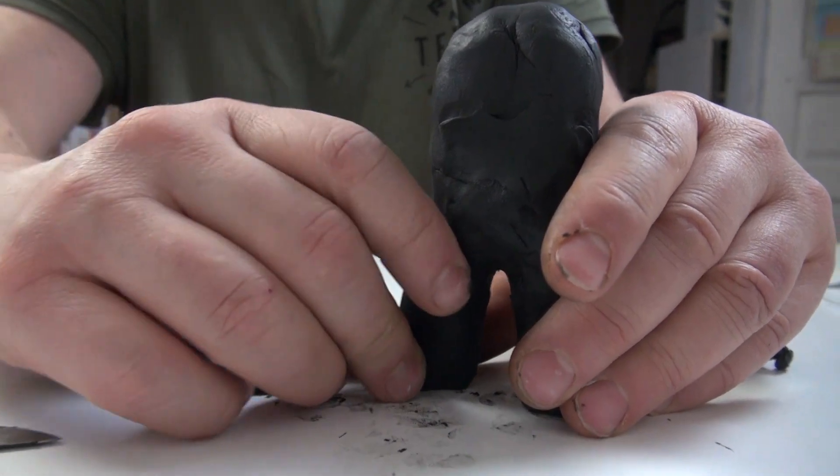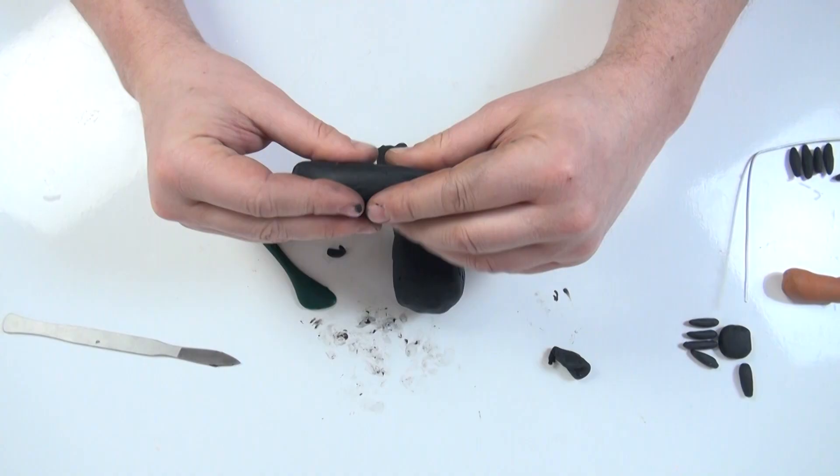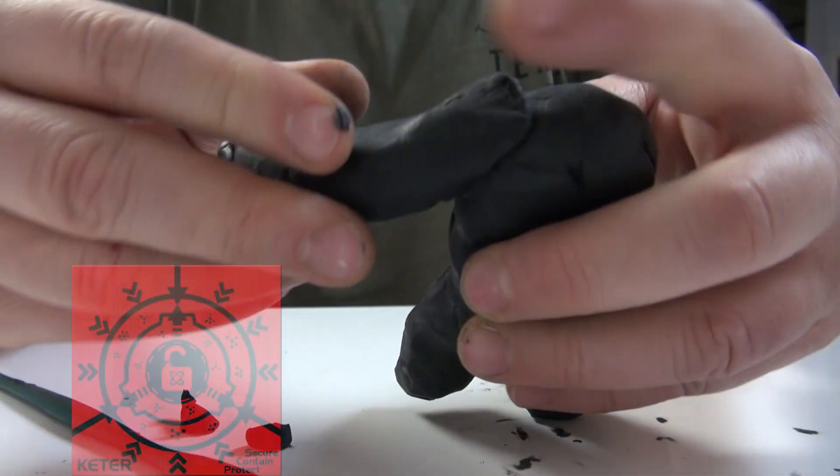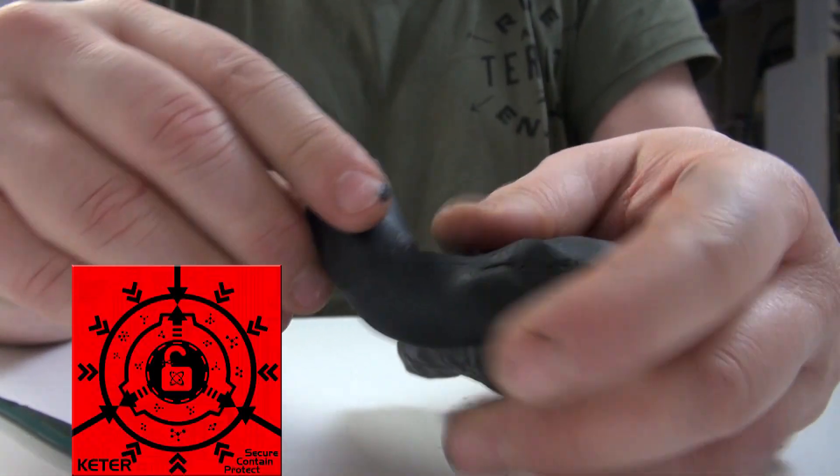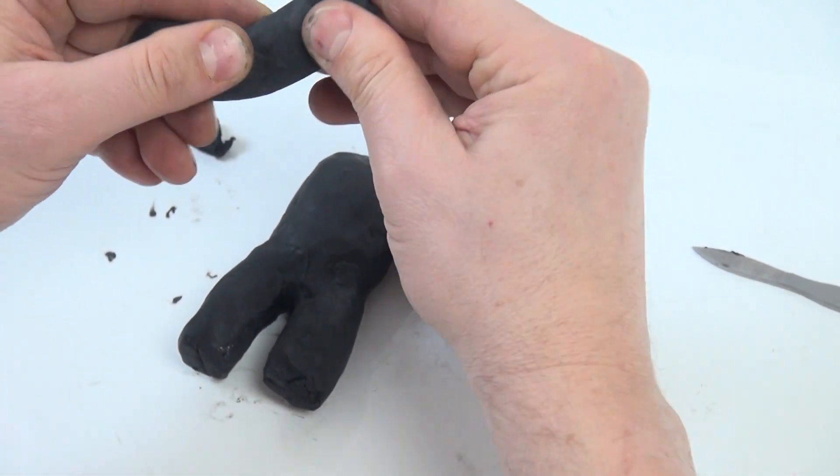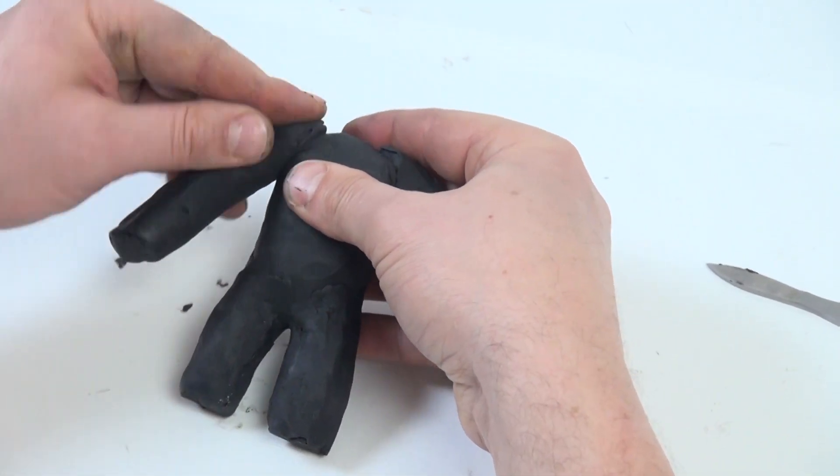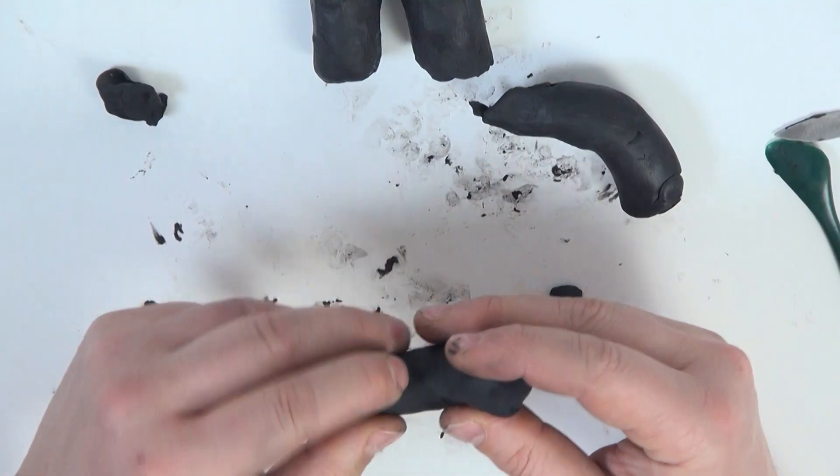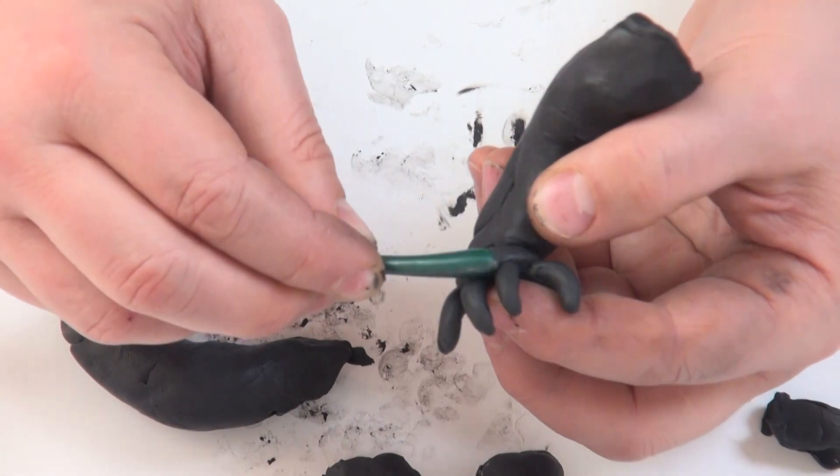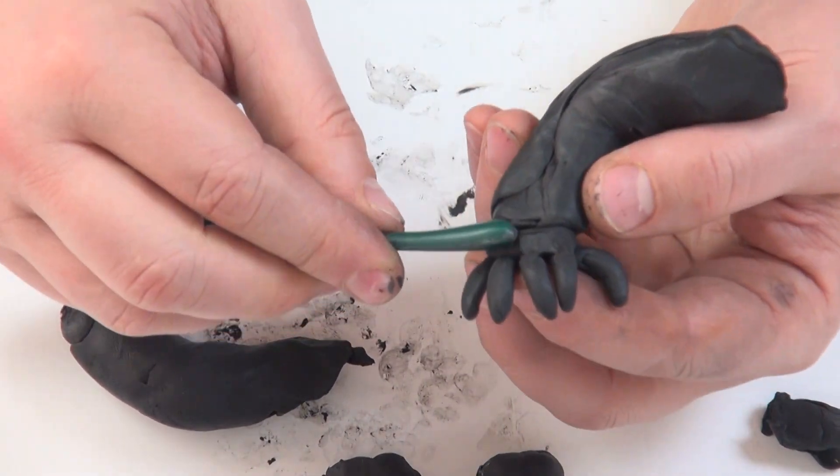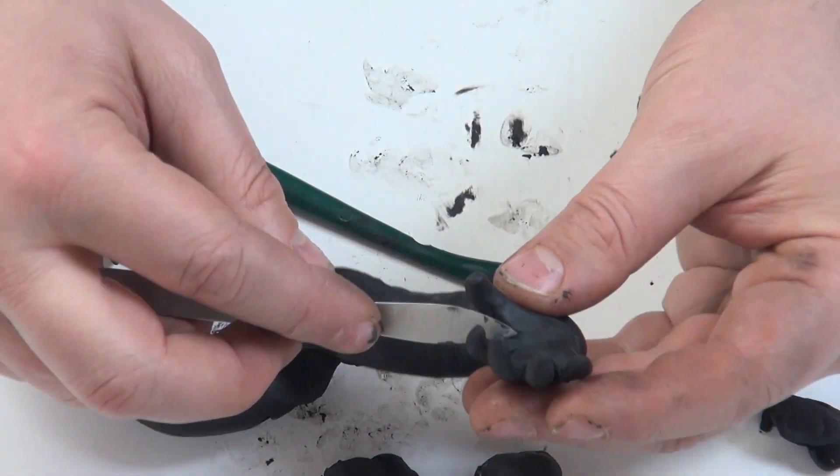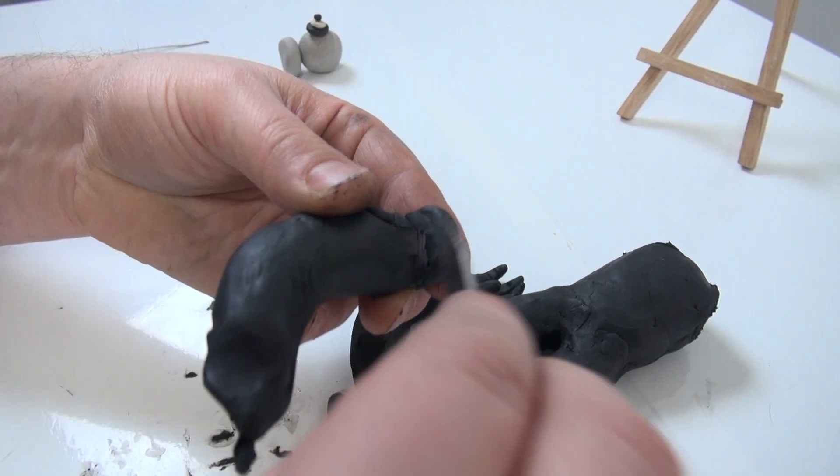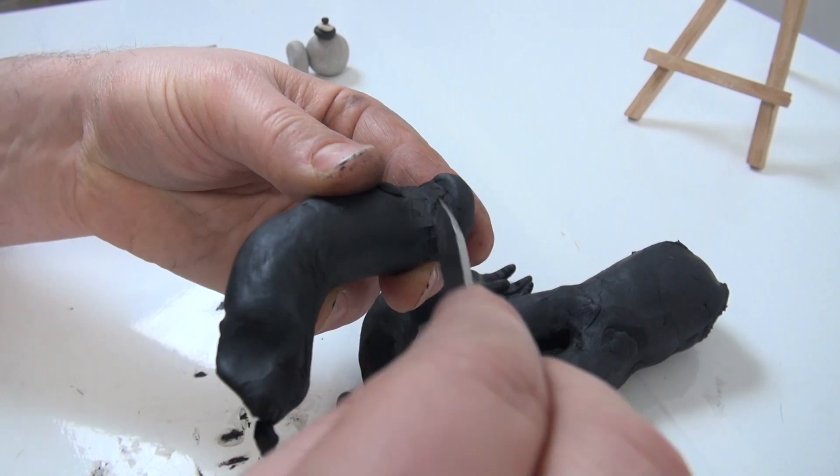Today I will be sculpting object SCP-2006. This is a very interesting object. First of all, this is a Keter class object. Objects of this class, as you know, show clear and active hostility towards human life and civilization and are capable of causing significant destruction in case of breach of containment conditions. Such objects must be cataloged, contained according to special containment conditions and, if possible, destroyed.